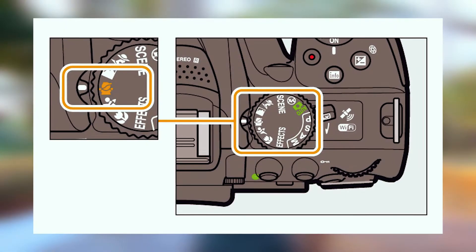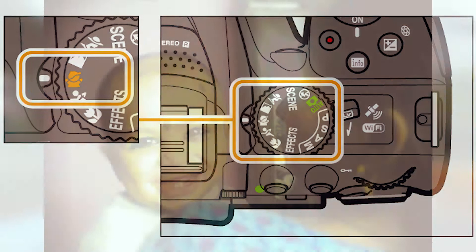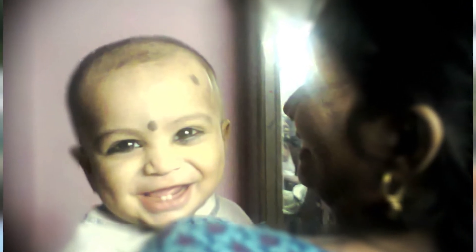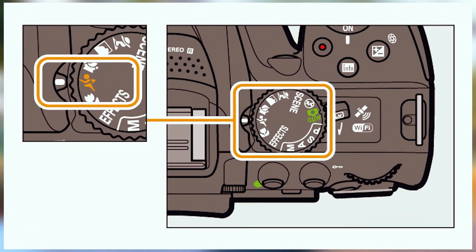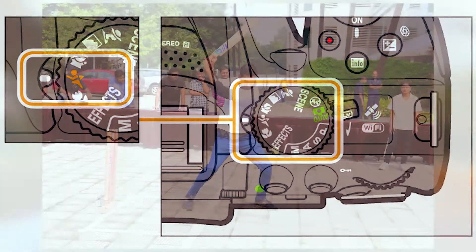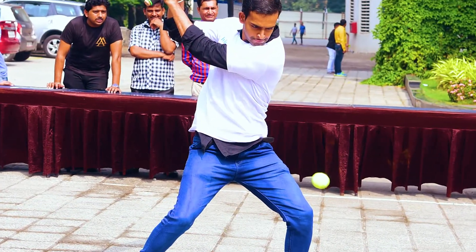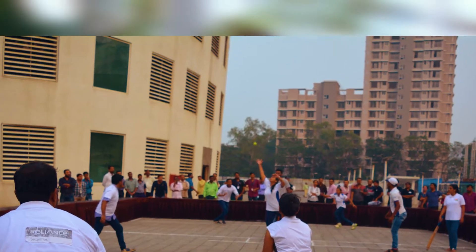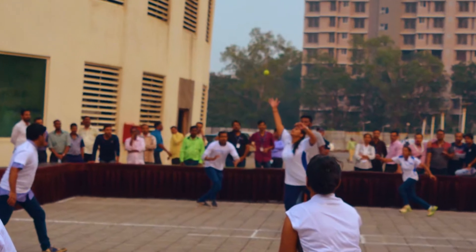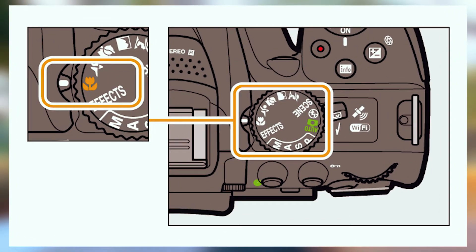Next is baby mode. Nikon's baby mode helps you capture great images if you have a baby. After that is sports mode — in sports mode, when you shoot fast-moving subjects, the camera automatically uses a high shutter speed to freeze the action and cover your images.